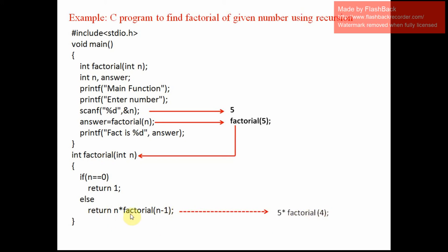Here you can see this function is calling the factorial function again. What is the parameter? It is 4. So what is happening here? It is calling factorial of 4. In factorial of 4, it will check n is 0 or not. n is 4 right now, so it will not execute the if; it will come to the else. It will execute the line: return n into factorial of n minus 1. What is n? 4. So 4 into factorial of 3. It will call the factorial again for the number 3.